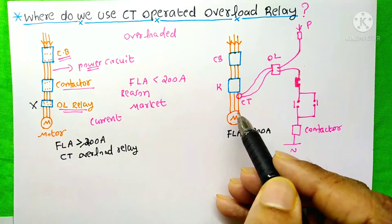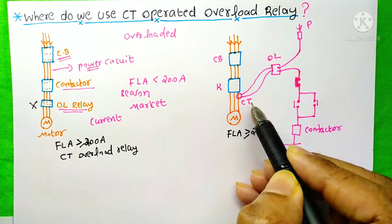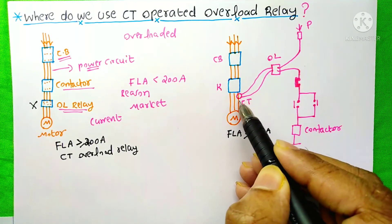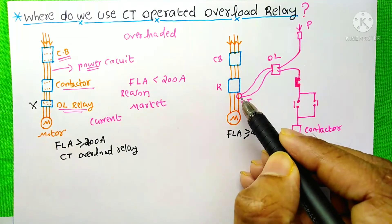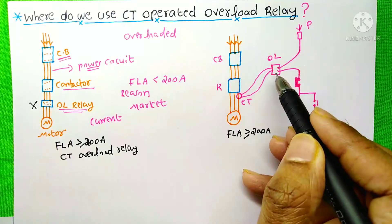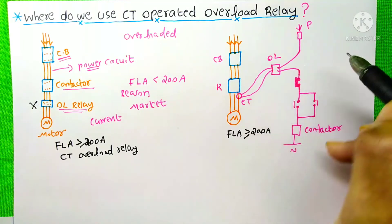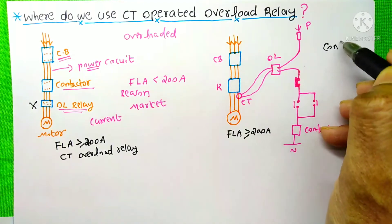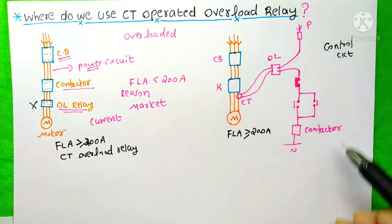So in this case, we use the current transformer in the power circuit, and we take the secondary wiring of this CT to the overload relay. This overload relay is on the control circuit, and it is the control circuit.